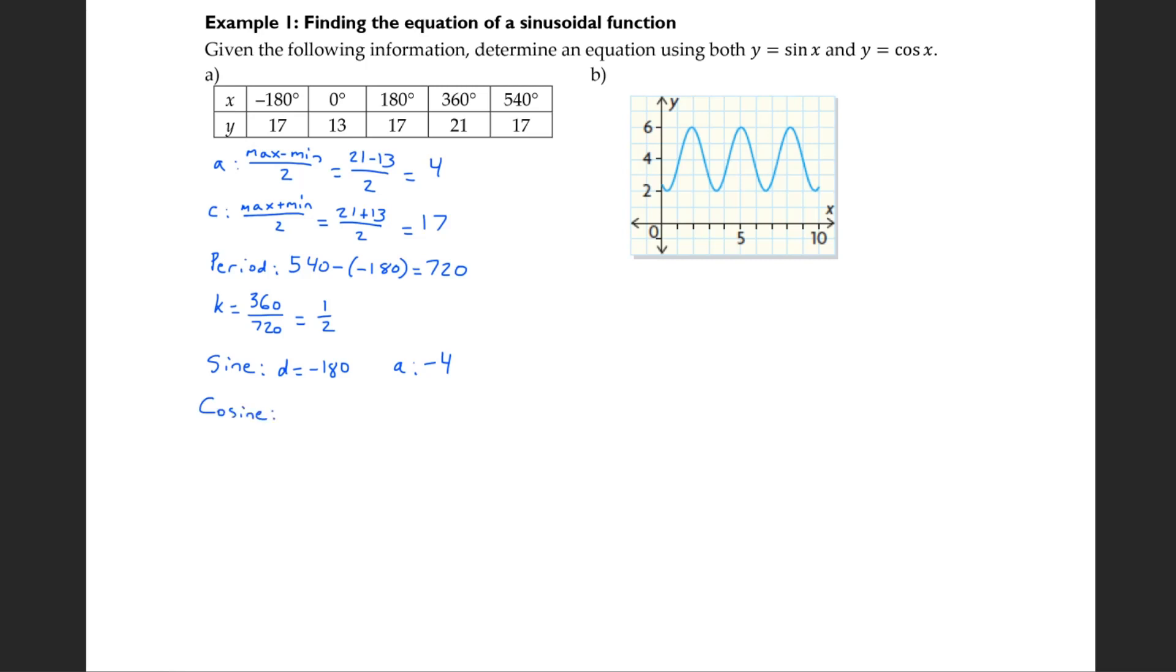As for cosine, cosine starts at the maximum, which is at 360. But we could also start it at its minimum. Now what's the minimum? Zero. So we'll start at zero. But if cosine is starting at its minimum instead of its maximum, that means once again it is reflected. So it's negative 4. Again, had you used 360 for d, then a would have been positive 4 still.